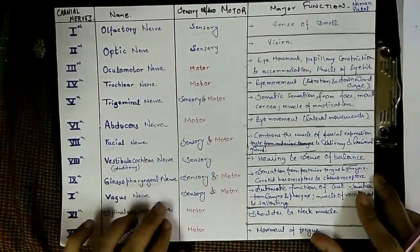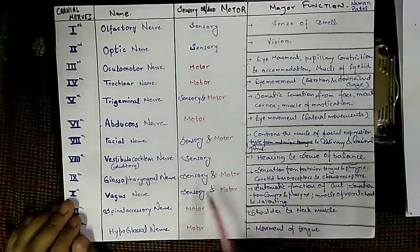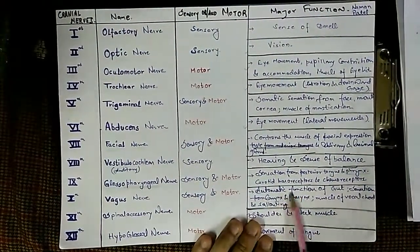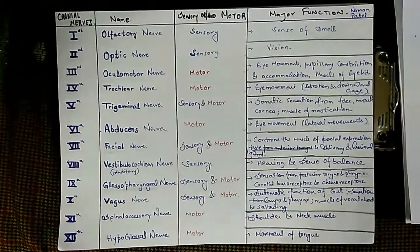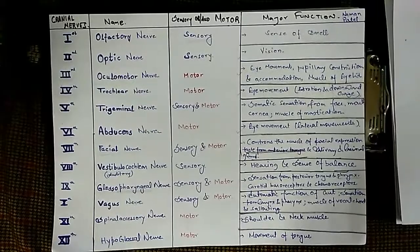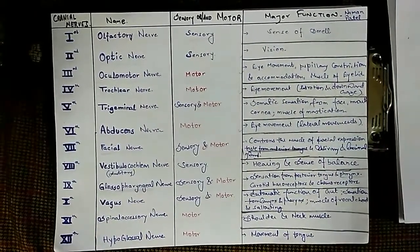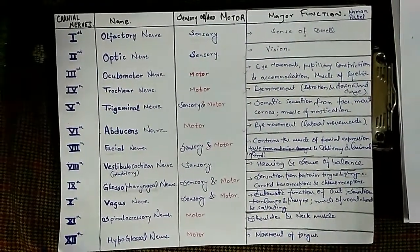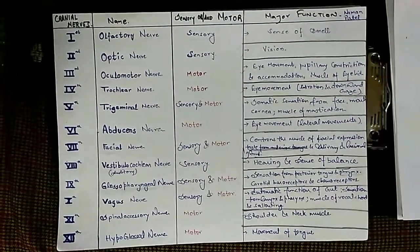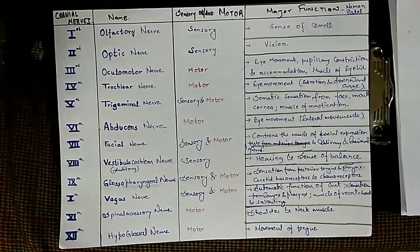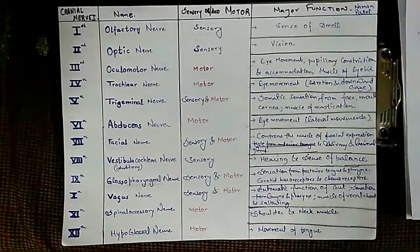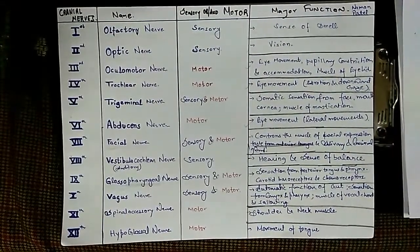The tenth cranial nerve is the vagus nerve, which is both sensory and motor. It governs the autonomic functions of the gut including peristalsis, sensation from the larynx and pharynx, and the muscles of the vocal cords and swallowing.